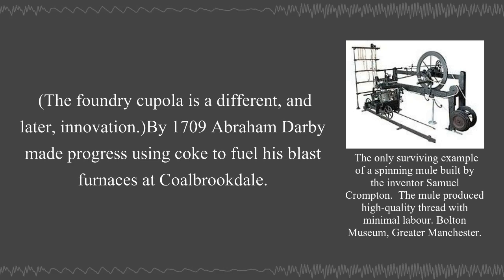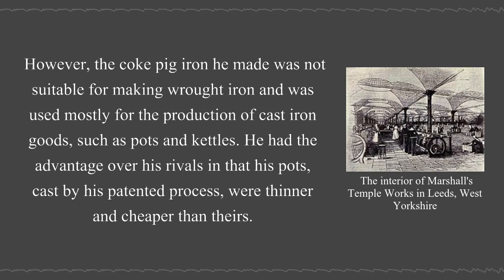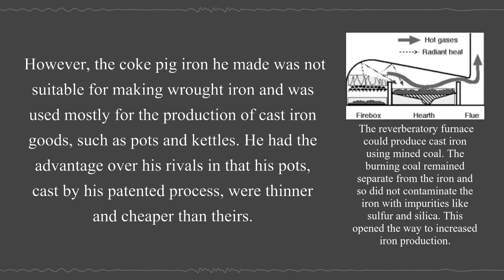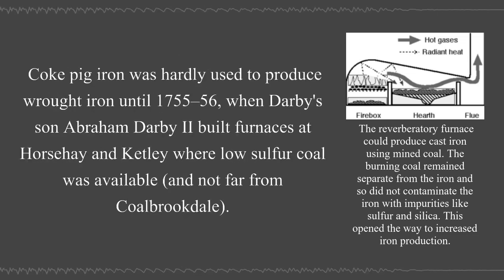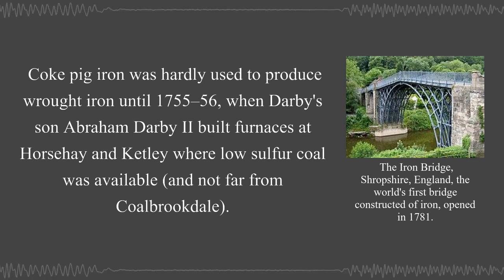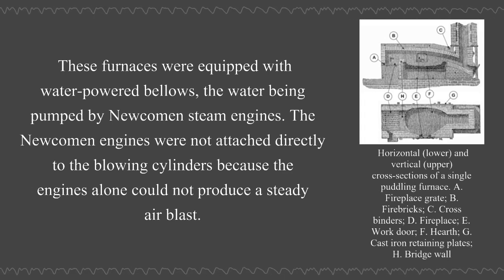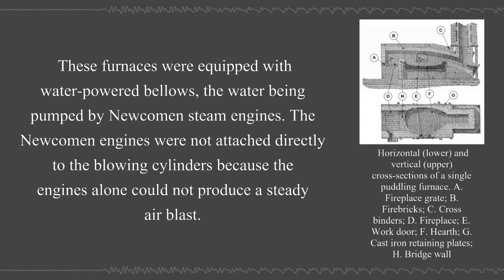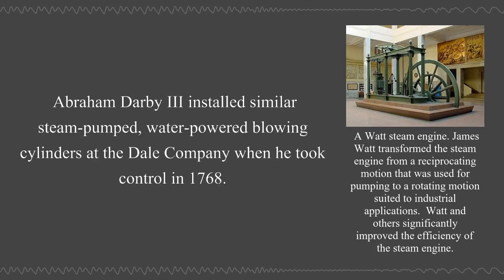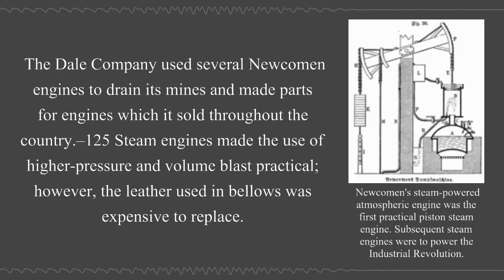By 1709, Abraham Darby made progress using coke to fuel his blast furnaces at Coalbrookdale. However, the coke pig iron he made was not suitable for making wrought iron and was used mostly for the production of cast iron goods such as pots and kettles—his pots cast by his patented process were thinner and cheaper than rivals'. Coke pig iron was hardly used to produce wrought iron until 1755–56, when Darby's son Abraham Darby II built furnaces at Horsehay and Ketley where low sulfur coal was available. These furnaces were equipped with water-powered bellows, the water being pumped by Newcomen steam engines. Abraham Darby III installed similar steam-pumped, water-powered blowing cylinders at the Dale Company when he took control in 1768.